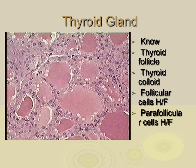You need to be able to identify the thyroid follicle, the follicular cells, thyroid colloid, and parafollicular cells. You also need to know a hormone and function for the follicular cells, and a hormone and function for the parafollicular cells.